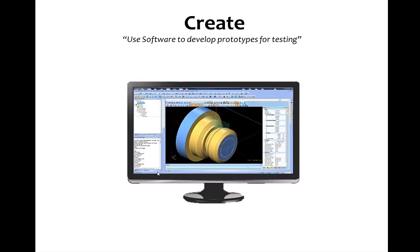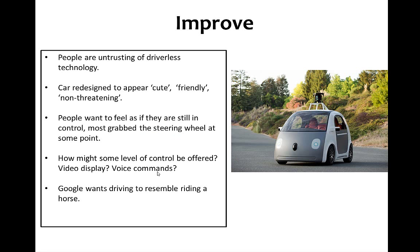With our solution and plan in place, next comes the interesting part — creating stuff using software. There are a bunch of different CAD tools we can get into. The end result of this process involves improvements. From the Google driverless car experience, surprisingly, a lot of people were untrusting of driverless technology. People have been driving so long that they are reluctant to trust a machine, so some ideas that came out of the first iteration of the engineering design process at Google were to redesign the car to appear cute, friendly, and non-threatening.